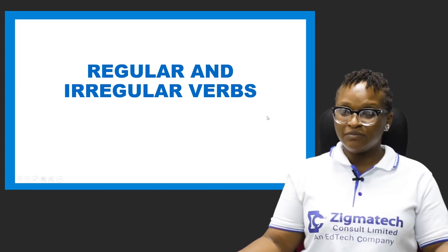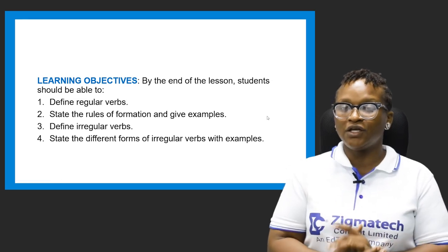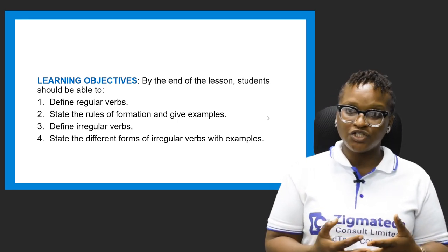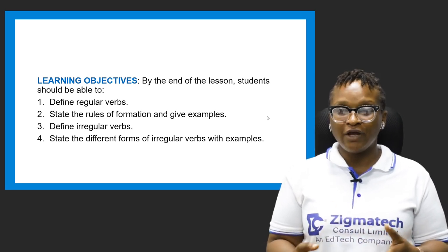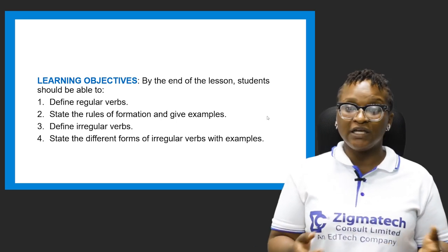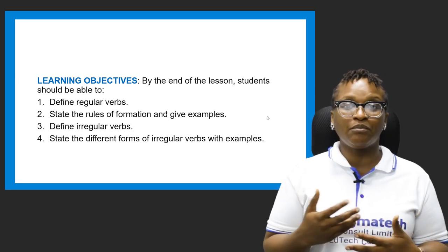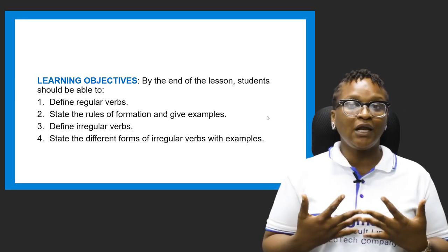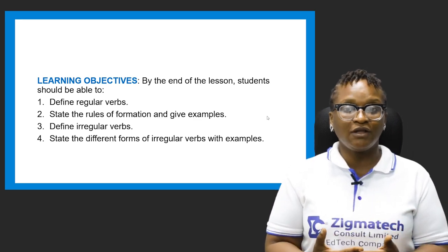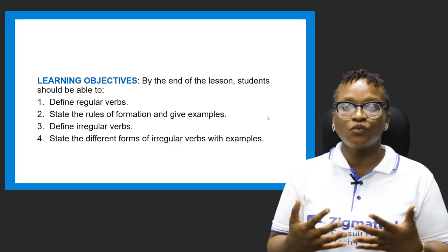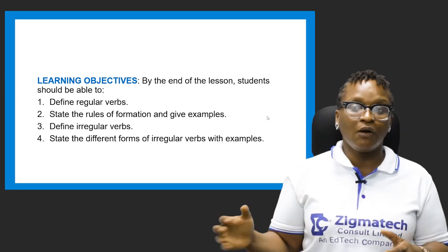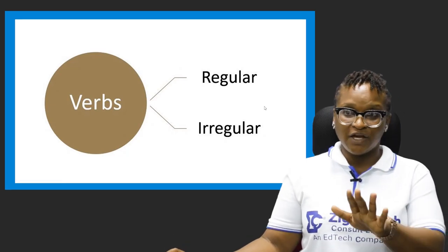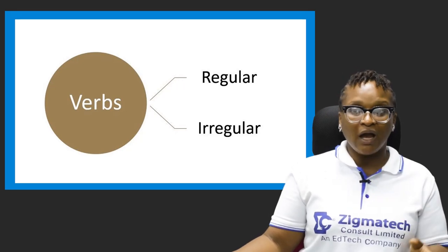I believe that by the names, you would to an extent know where we are going. When we talk about regular verbs, regular verbs are verbs that — by its name, regular — the changes are not much. While irregular verbs are verbs that obviously are not steady; they keep changing at every given opportunity. This is just a peripheral definition. To have a holistic knowledge, we have split our learning objectives into four: we'll define regular verbs and state rules for forming them, and we'll define irregular verbs and state the different forms with their examples.